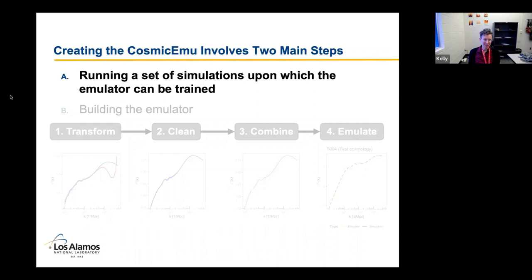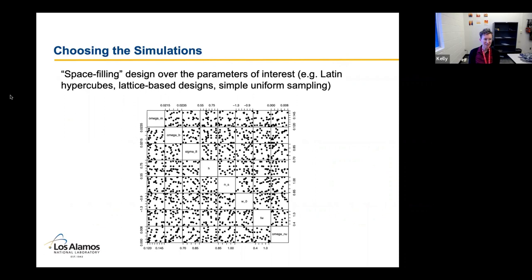So there's two main steps to creating the cosmic EMU. The first is running a set of simulations upon which the emulator can be trained. And the second, which I'll talk about in much more detail, is building the emulator. So first, there's this question of how to choose what simulations to run, so what settings to try. And a common choice is a space filling design, so something like Latin hypercubes or simple uniform sampling. What we used was a nested space filling lattice that could be run in stages. The idea here was that we were going to be running the computers for a really long time and we didn't want to wait five years to be able to do our analysis. We wanted to be able to have checkpoints at one and three years in to get a first rougher pass at the emulator.